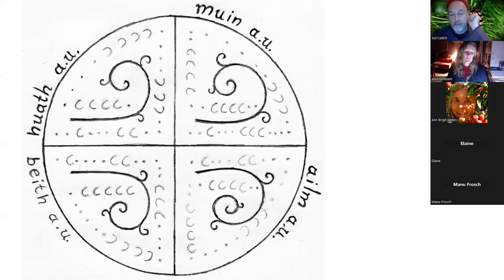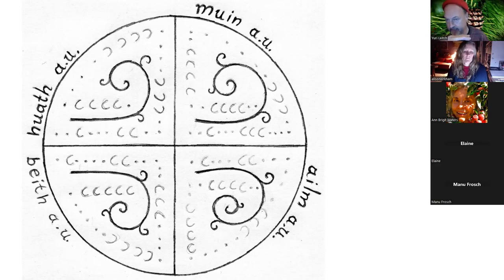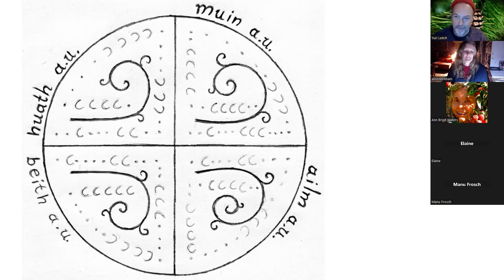The bottom left corner is the first acma — the Beith acma. The top left is the second acma — the Uatha acma, the hawthorn one. Top right is the third acma, and bottom right is the fourth acma, which starts with Ailm — the pine tree. The spirals inside each quarter show a downward energy in both lower quarters and an upward energy in both upper quarters, like music or vibration: the two lower quarters have a downward dance and the two top quarters have an upward dance.